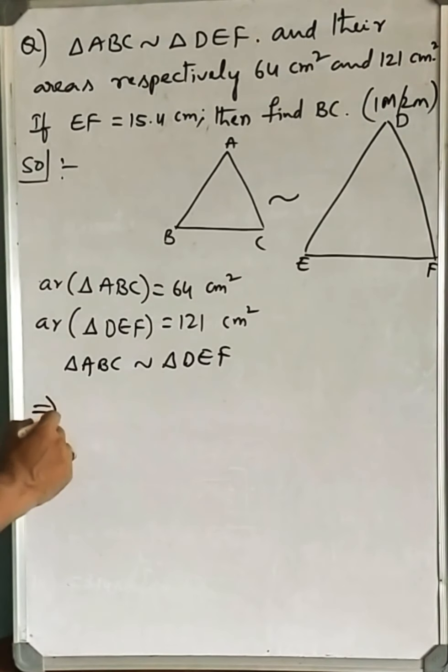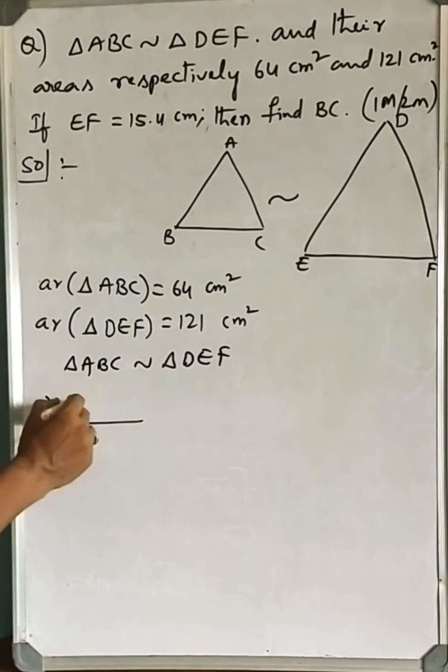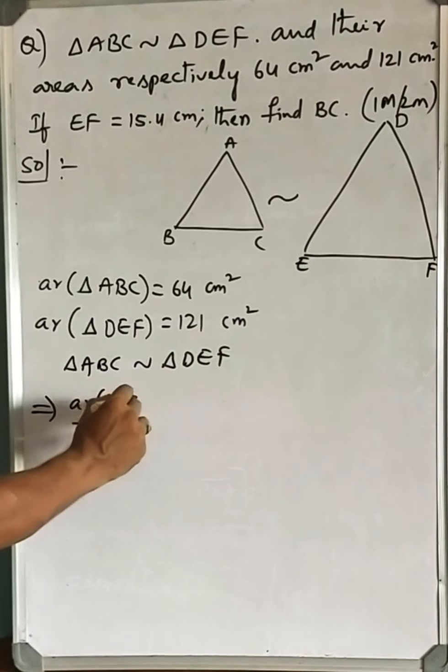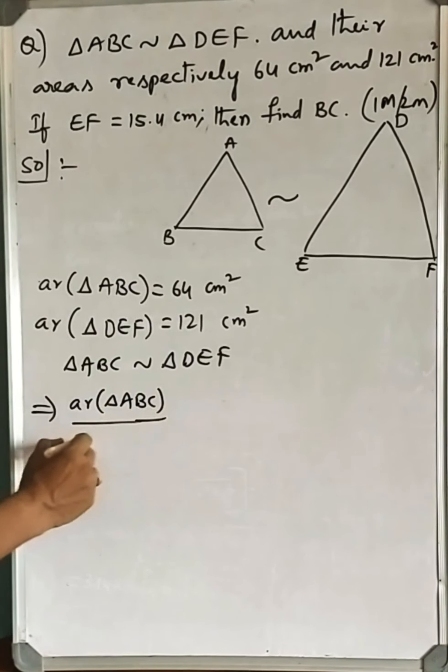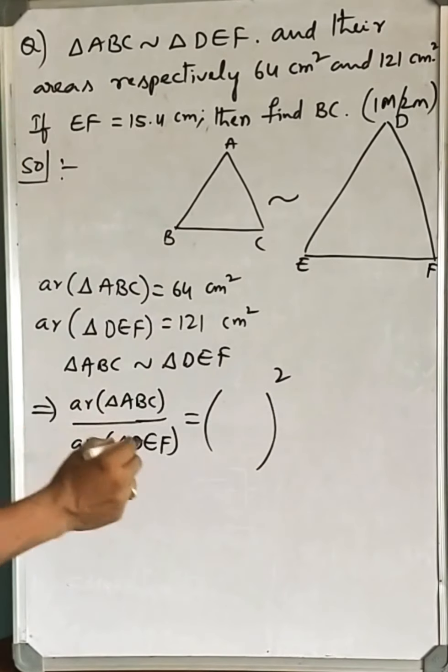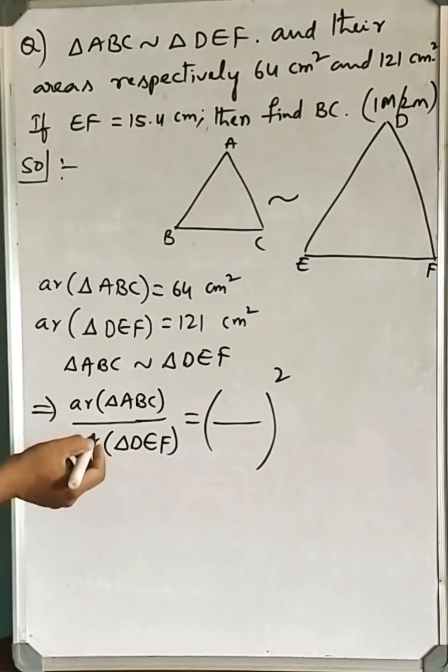Which implies the ratio of their areas - that is, area of triangle ABC over area of triangle DEF - is equal to the square of the ratio of corresponding sides.